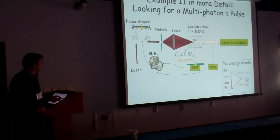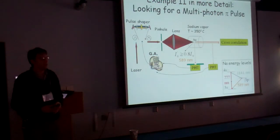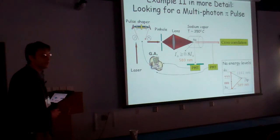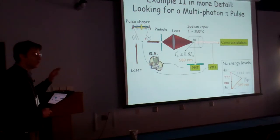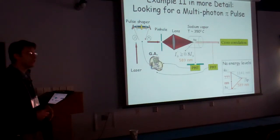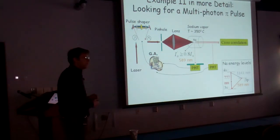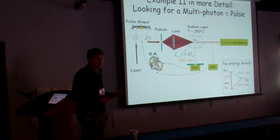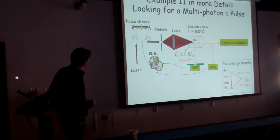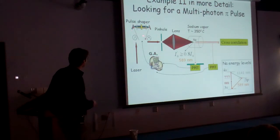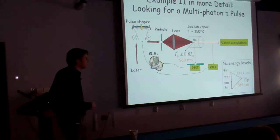To address this problem, we decided to do a closed-loop experiment — a genetic algorithm approach — to see if it could find its way out of the dynamic Stark shift problem. The experimental setup used a pulse shaper similar to what was outlined in the earlier talks.